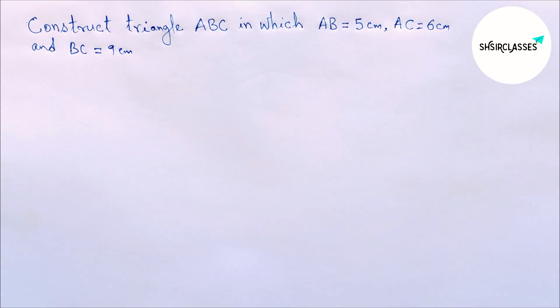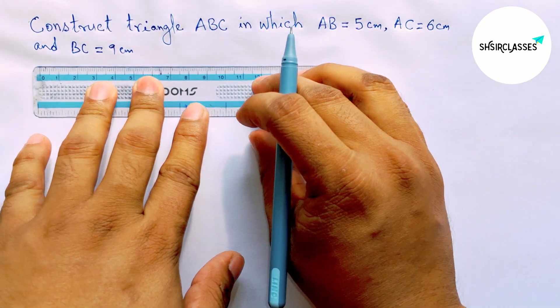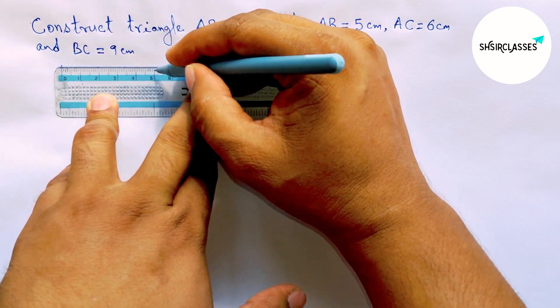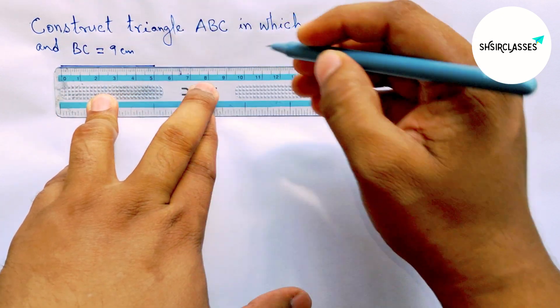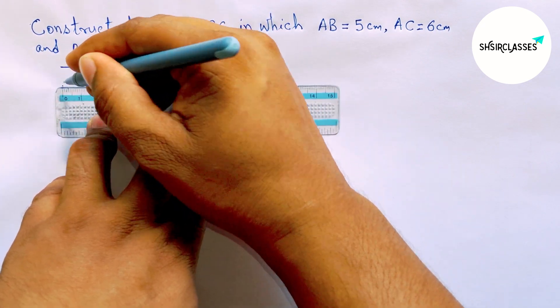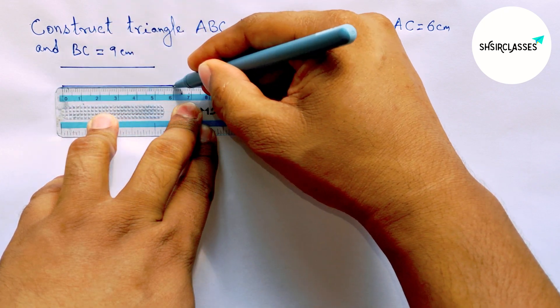So let's start the video. First of all, let us draw here given three sides. So first drawing a line segment of length five centimeter, then drawing six centimeter line segment. So this is a six centimeter line segment.